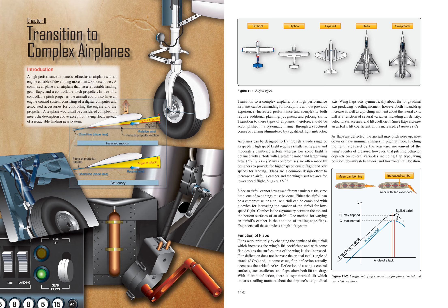Chapter 11: Transition to Complex Airplanes. A high-performance airplane is defined as an airplane with an engine capable of developing more than 200 horsepower. A complex airplane is an airplane that has retractable landing gear, flaps, and a controllable pitch propeller. In lieu of a controllable pitch propeller, the aircraft could also have an engine control system consisting of a digital computer and associated accessories for controlling the engine and propeller. A seaplane would still be considered complex if it meets this description except for having floats instead of a retractable landing gear system.